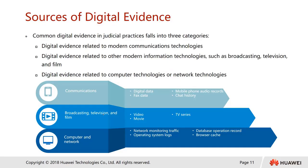Where does digital evidence come from? We can categorize the sources into three categories. The first is digital evidence related to modern communication technologies — for example, digital data, fax, mobile phones, and audio records. When somebody makes a conversation over mobile phones, the recorded conversation, chat history, SMS history, and WhatsApp history are all potential evidence.